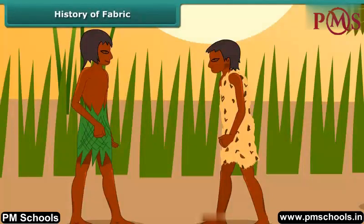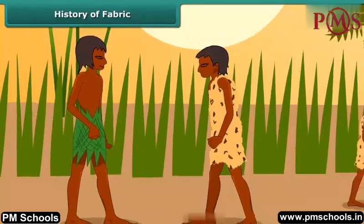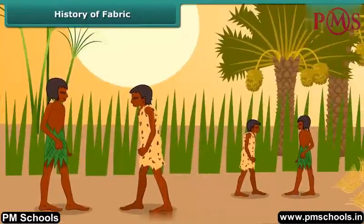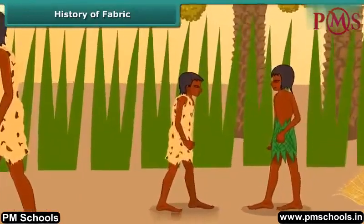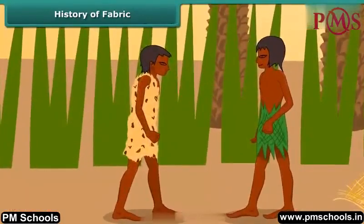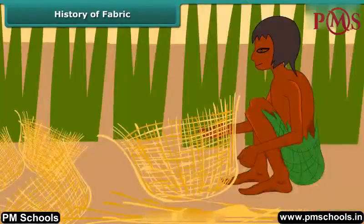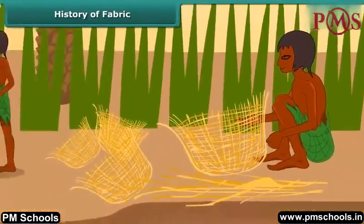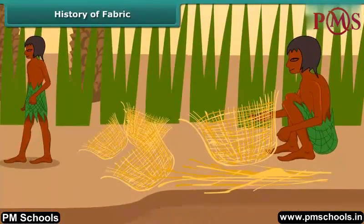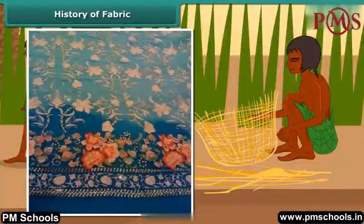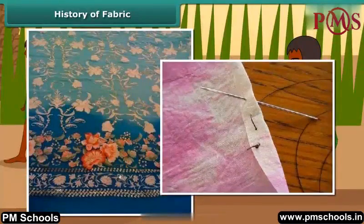History of fabric. Have you ever wondered what materials people used in ancient times for clothing? They used the barks, leaves of trees, animal skins and fur to cover themselves. Slowly with growing civilization, they learned to weave twigs and grass into mats and baskets. Stitched fabrics came much later with the invention of needles.